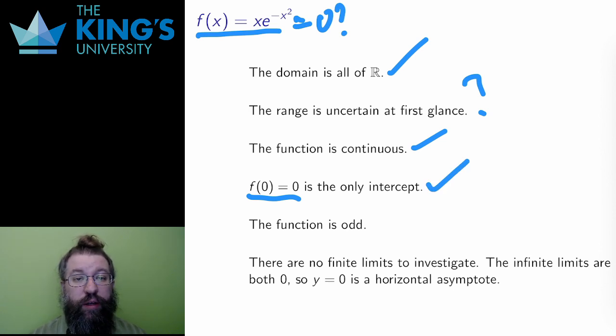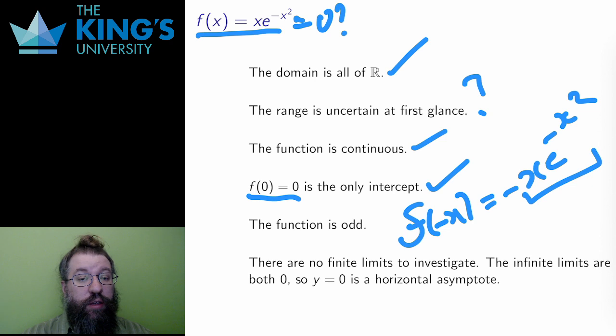The function is defined everywhere, so symmetry is possible. If I put negative x into the function, the exponential piece with x squared is the same, but the x out front becomes negative x, and therefore the function on negative x is the negative of the whole function, and that's the definition of odd symmetry. So the negative part of the function is a rotational match around the origin for the positive half.